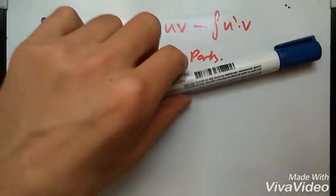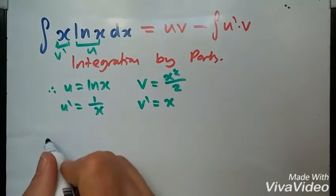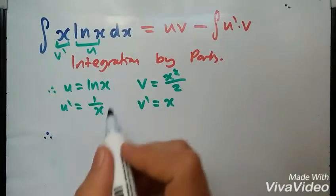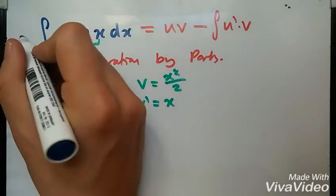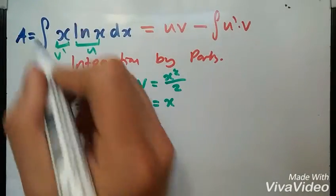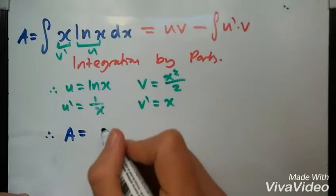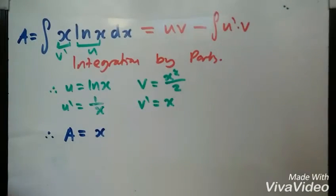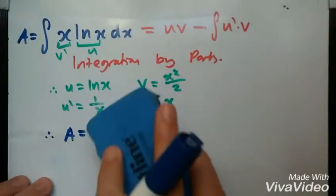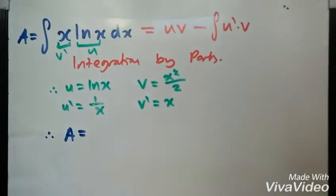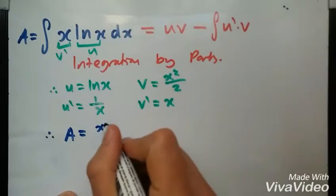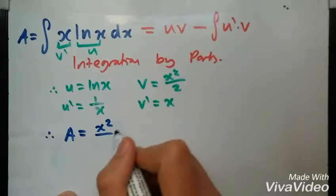Now using the above formula, what do we have? Therefore this integral at the top, we'll just put this as A. So A equals u times v, not v prime, so u times v will be x squared over 2 times log x. I don't want to write the log x first because it might look a bit weird.